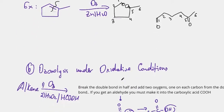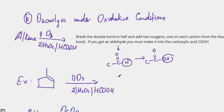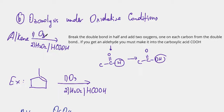Now let's do the second type of ozonolysis: ozonolysis under oxidative conditions. Under oxidative conditions, the first step is again O3, but the second step is H2O2 or HCOOH. It's very important, when you have an ozonolysis, to look at what the second step is — is it reductive or oxidative? — because it might change the products.